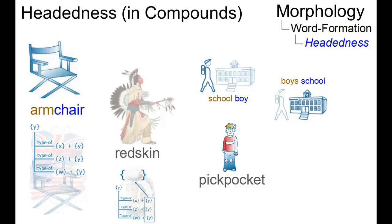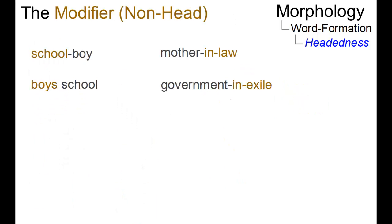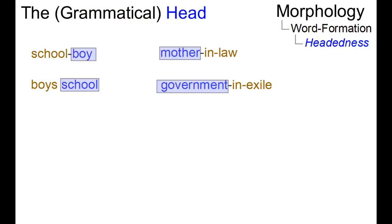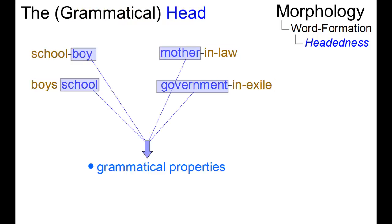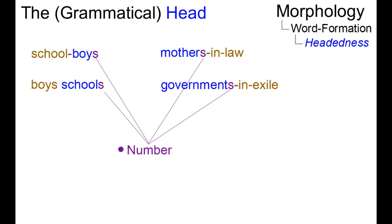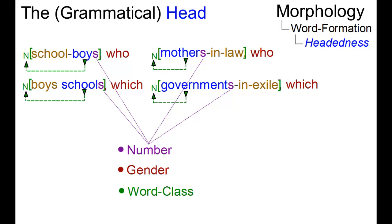Compounds, like other constituents, can be defined as consisting of a head and a non-head. While the non-head or modifier is peripheral to the construction, the head determines several grammatical properties of the compound, such as the number of the compound — for example the plural form — or the gender of the compound, indicated by the choice of the relative pronoun, and last but not least, the word class.